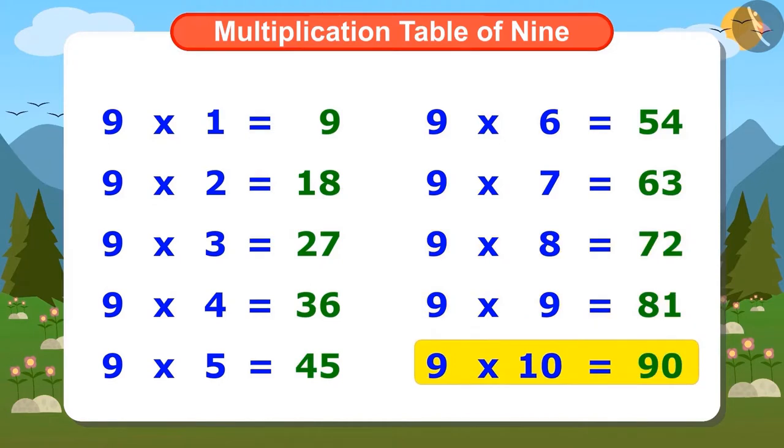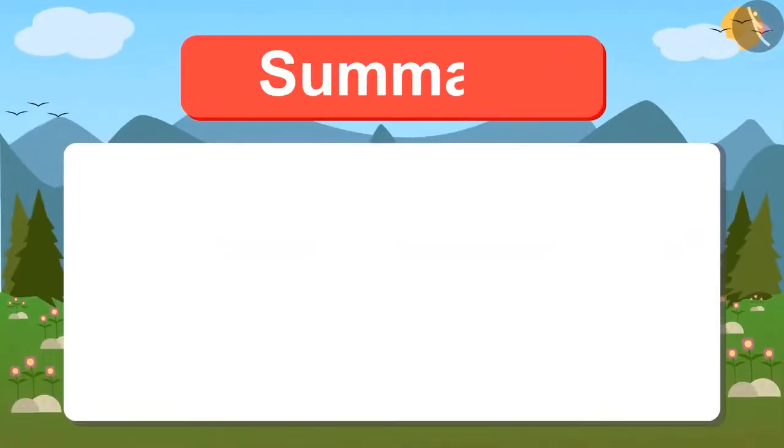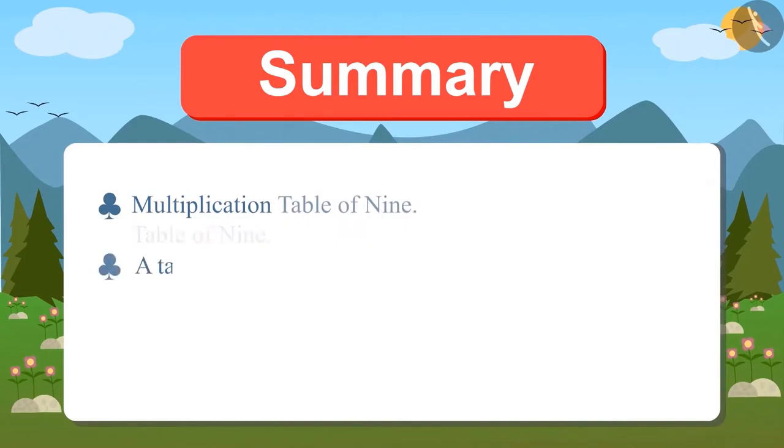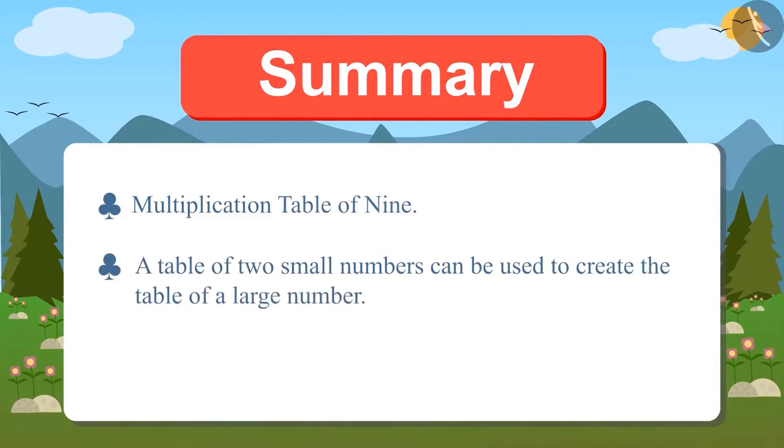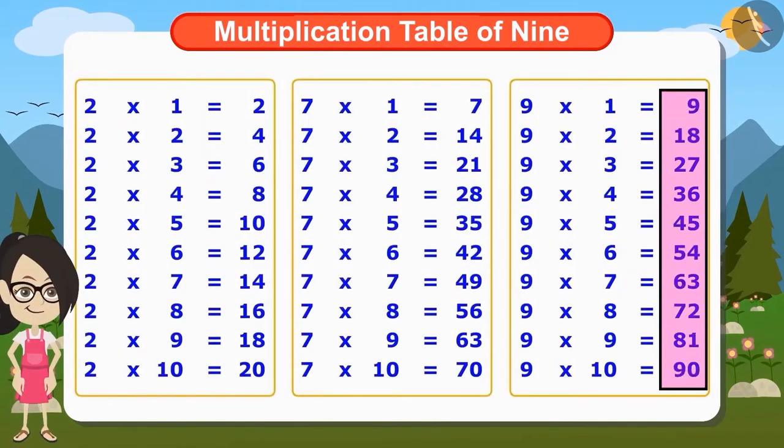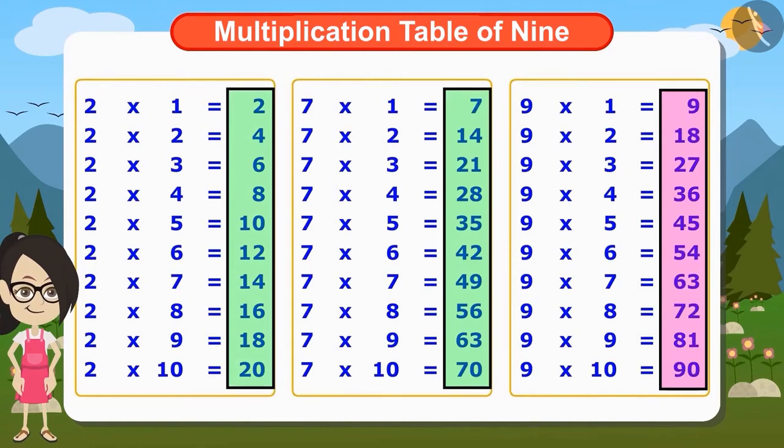Today we learned multiplication table of 9 and together we also learned a table of two small numbers can be used to create the table of a large number. For example, Vandana used the tables of 2 and 7 to find the table of 9.